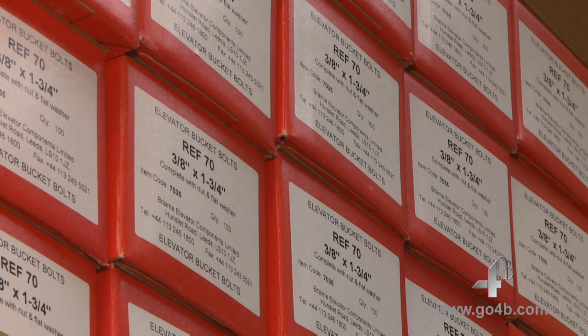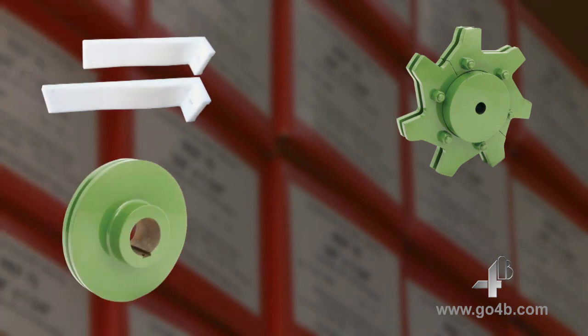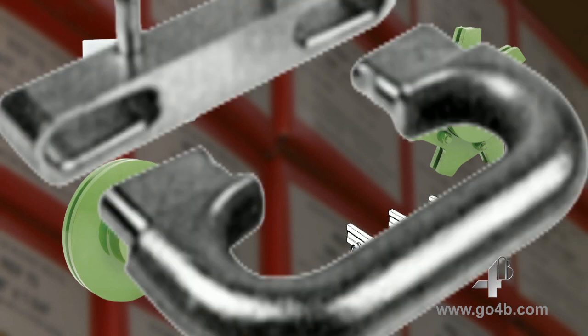4B also offers a full range of accessories including sprockets, trailers, nylon flights for scraper chains, flight sleeves and round link chain.